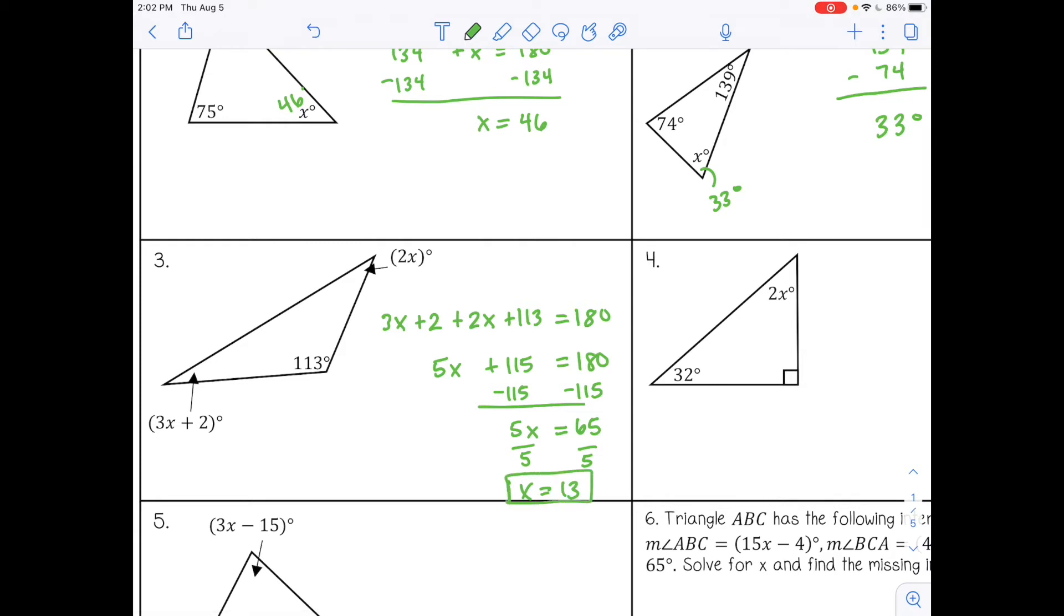So X equals 13. And then I'm going to substitute X back in to my expressions to find the actual degree measure. For this one, 2 times 13, that would be 26 degrees. And then 3 times 13 plus 2, that would be 41 degrees.